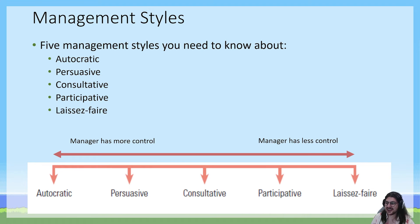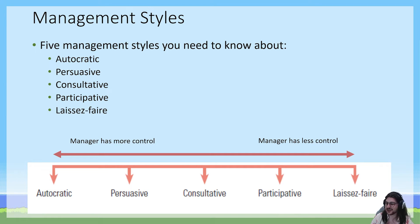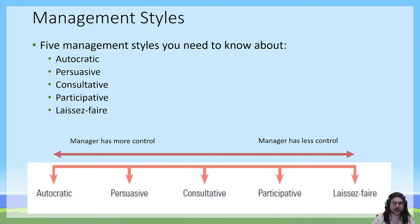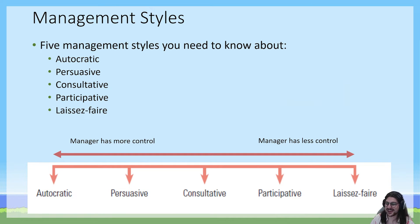The five management styles listed in the study design are autocratic, persuasive, consultative, participative, and laissez-faire — that's French, and it generally translates as 'let do' or 'just let it go.' If we lay these out on a continuum, the autocratic management style is where the manager has the most control, and the laissez-faire management style is where the manager has the least control.